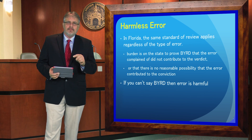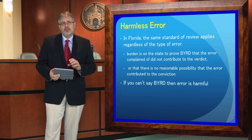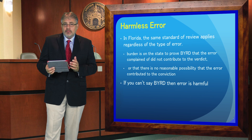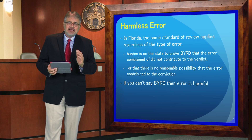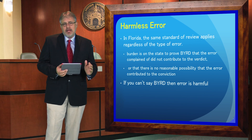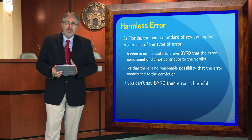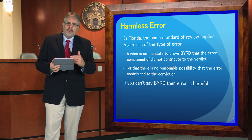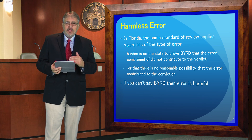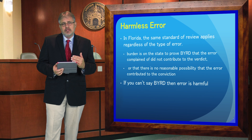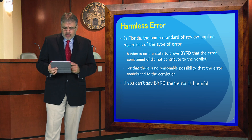Florida, on the other hand, does not differentiate between constitutional and non-constitutional evidentiary mistakes on appeal. Instead, once the issue of the error exists at the appellate level, the burden is going to be on the state of Florida to show to a beyond a reasonable doubt standard that the error complained of did not contribute to the verdict, or that there is no reasonable possibility that the error contributed to the conviction itself. In Florida, if that beyond a reasonable doubt standard has not been met, then the error is deemed harmful, regardless of whether it is a constitutional or a non-constitutional error. We do this primarily to ensure that the defendant in a criminal case gets the right level of protection at the appellate level.